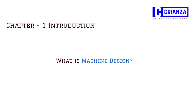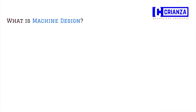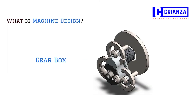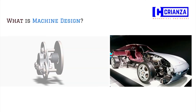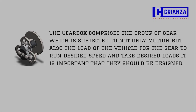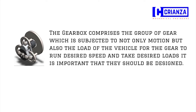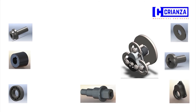For understanding machine design, let us consider an example of a gearbox of a car. Usually the gearbox transmits the motion and power of the engine to the wheels of the vehicle. The gearbox comprises a group of gears which are subjected to not only motion but also the loads of the vehicle. For the gears to run at desired speeds and take desired loads, it is important that they should be designed.